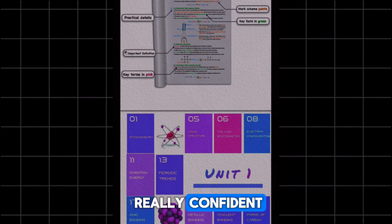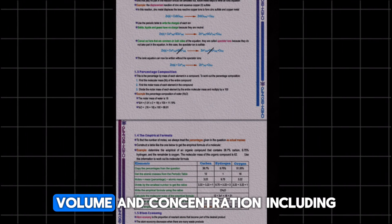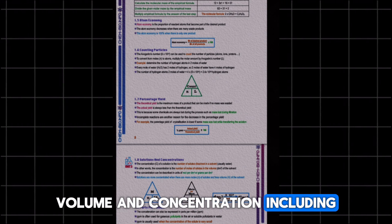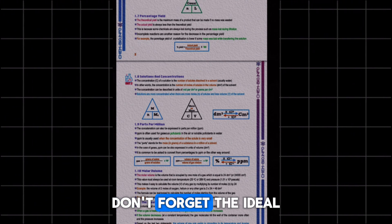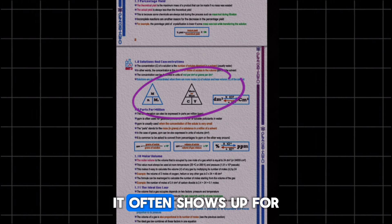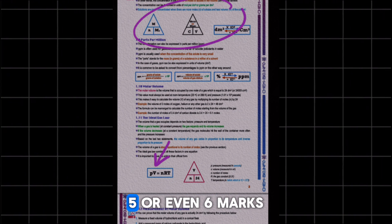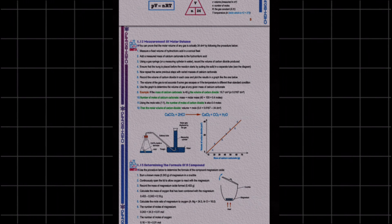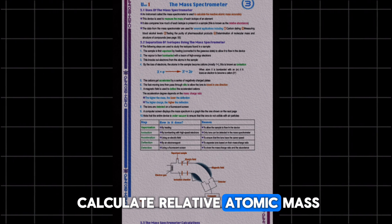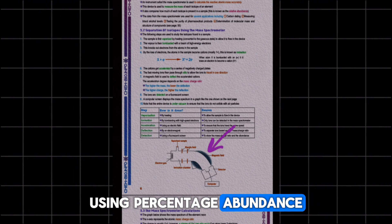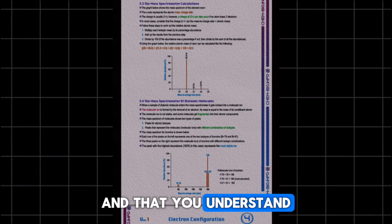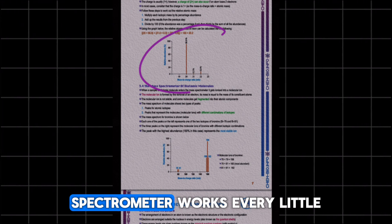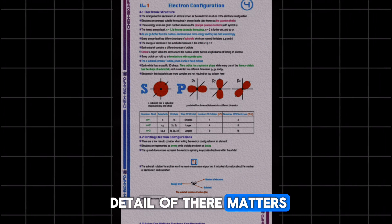You need to be really confident with the chemical formulas related to mass, volume, and concentration, including parts per million. Don't forget the ideal gas law. It often shows up for 4, 5, or even 6 marks. Make sure you can calculate relative atomic mass using percentage abundance and that you understand how the mass spectrometer works. Every little detail there matters.